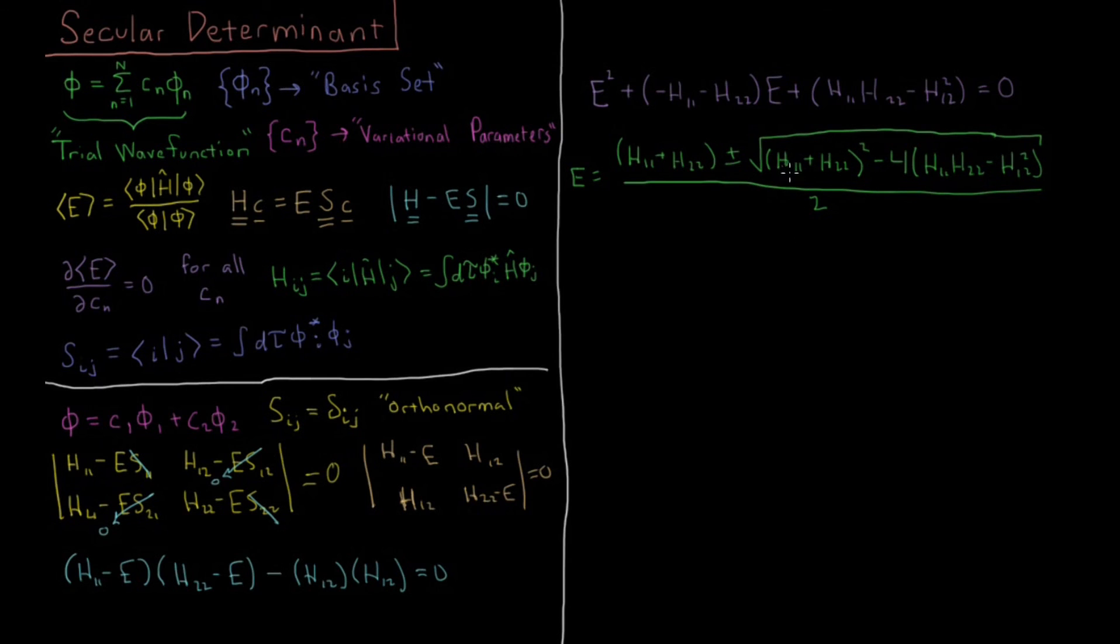So what we want to get is this radicand here, which I'm just going to call 'rad'. This is going to be equal to, we expand out this polynomial, H11² + 2*H11*H22 + H22² - 4*H11*H22 and then -H12² times -4 gives us +4*H12².